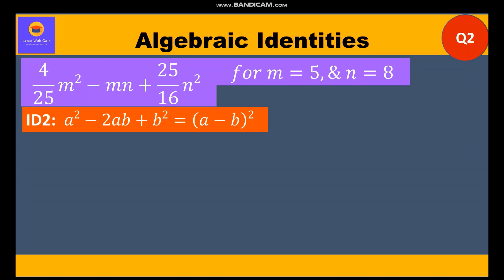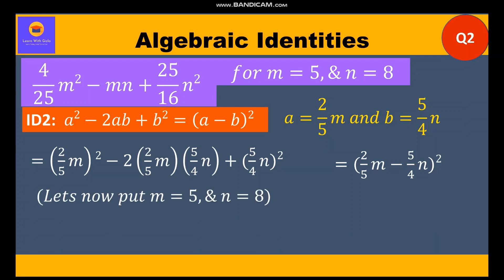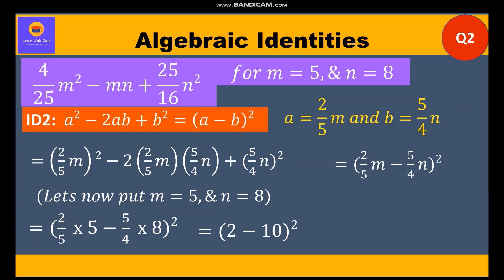We write this in the form of identity 2, where a = (2/5)m and b = (5/4)n. So we write (2/5·m)² - 2·(2/5·m)·(5/4·n) + (5/4·n)², giving factors (2/5·m - 5/4·n)². Putting m = 5 and n = 8, we get (2/5·5 - 5/4·8)² = (2 - 10)² = (-8)² = 64.